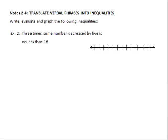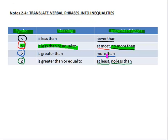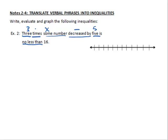Okay, so let's go ahead and write the inequality. It says 3 times, so that's 3 times some number. Don't know the number. So 3 times x decreased by, that means to subtract 5. 5 is no less than, means greater than or equal to. Let's go back to that chart. No less than, means greater than or equal to 16. There's our 16.